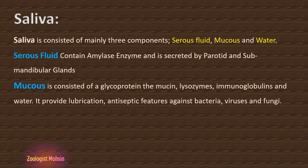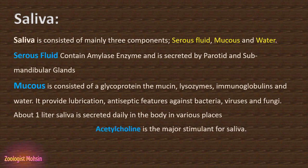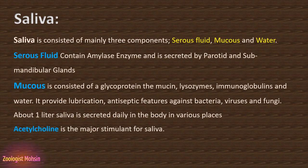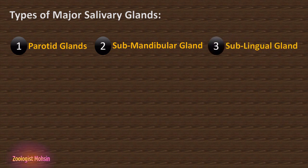Mucus provides lubrication and antiseptic features against bacteria, viruses, and fungi. About 1 litre of saliva is secreted daily in the body. Acetylcholine is the major stimulant for saliva secretion — this is important for exams. The three types of major salivary glands are: first, the parotid gland; second, the submandibular gland; and third, the sublingual gland.